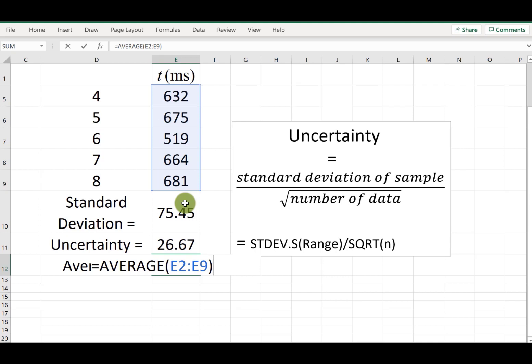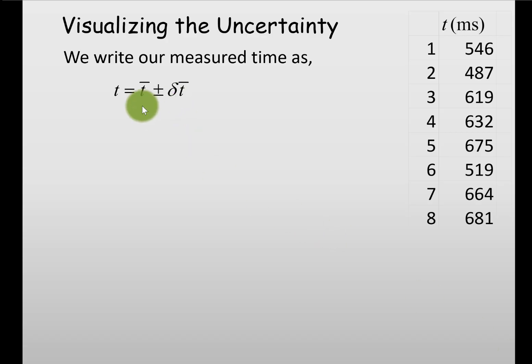Hit enter and there is the average. Now we have the mean value and the uncertainty of this data. We can see this time measurement is not a fixed value, rather it's an interval.